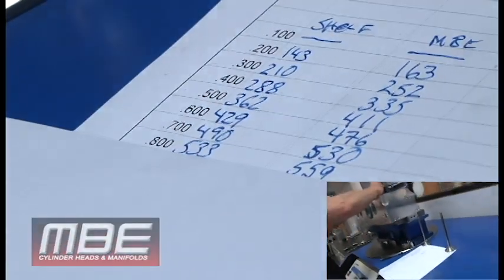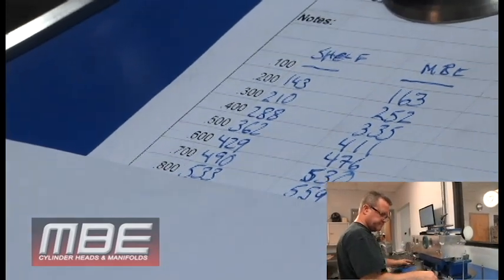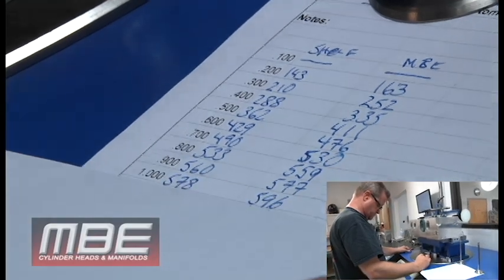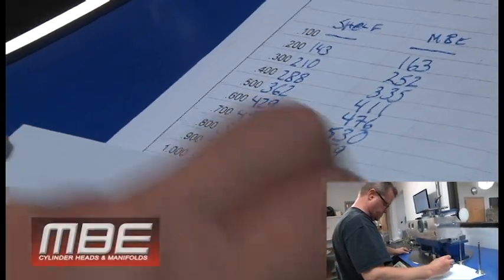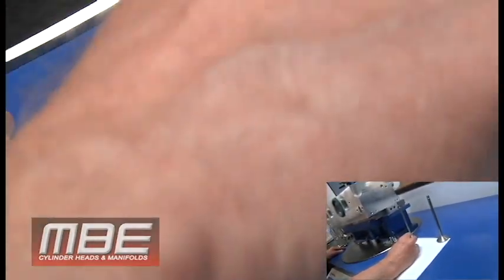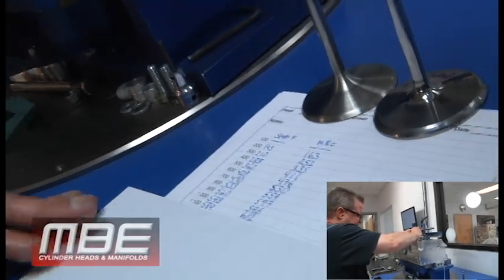But still, surprisingly, even when you get to the higher lifts it still makes a significant difference. We're almost 20 CFM difference here at one inch, so the angles are still important even though the valve's open up an inch and you would think it would be out of the way when you come up to here.